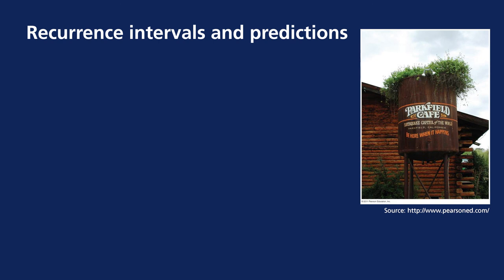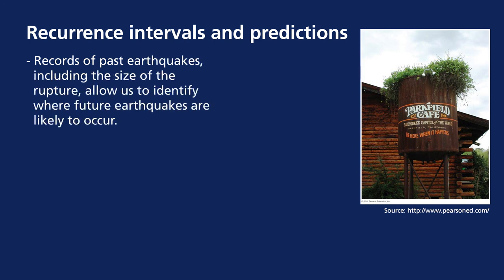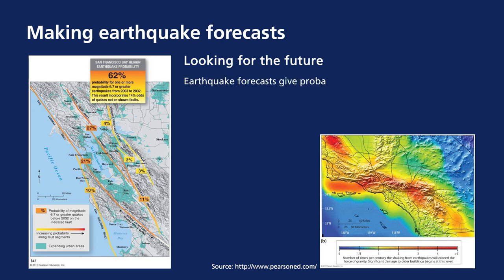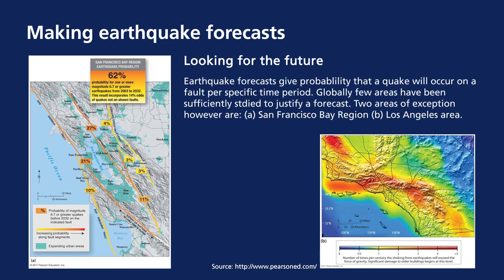Recurrence intervals are used when making predictions, coming from records of past earthquakes and the size of the rupture, to identify when another likely earthquake may occur. Knowing recurrence intervals, we can draw probability maps. For example, adding up the probabilities of a magnitude 6.7 earthquake within a 29-year interval in the San Francisco area shows a 62% probability, and similar maps can be drawn for Los Angeles.